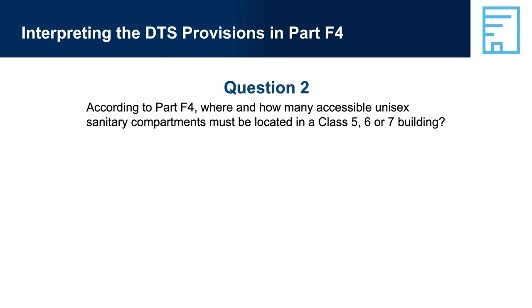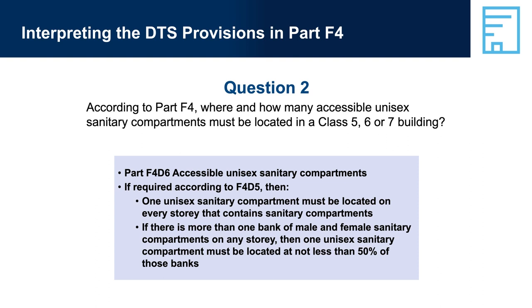Question 2: According to Part F4, where and how many accessible unisex sanitary compartments must be located in a Class 5, 6 or 7 building? Answer: Part F4D6, Accessible Unisex Sanitary Compartments — if required according to F4D5, then one unisex sanitary compartment must be located on every storey that contains sanitary compartments. If there is more than one bank of female and male sanitary compartments on any storey, then one unisex sanitary compartment must be located at not less than 50% of those banks. For example, if there are four sets of sanitary compartments on a floor, then at least two of those sets must have an accessible unisex sanitary compartment.